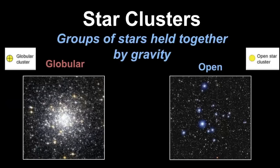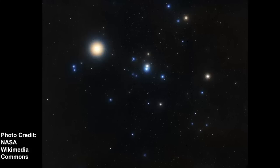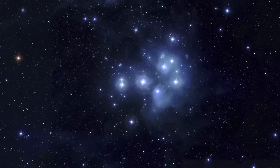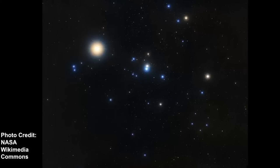Star clusters are groups of stars held together by gravity, and there are two types. Open star clusters don't have a defined shape — they are amorphous. Globular clusters have a roughly spherical shape. Common examples include the Pleiades and Hyades, which are open star clusters visible to the naked eye, while Messier 13 in Hercules is a globular star cluster with a distinctly different shape.